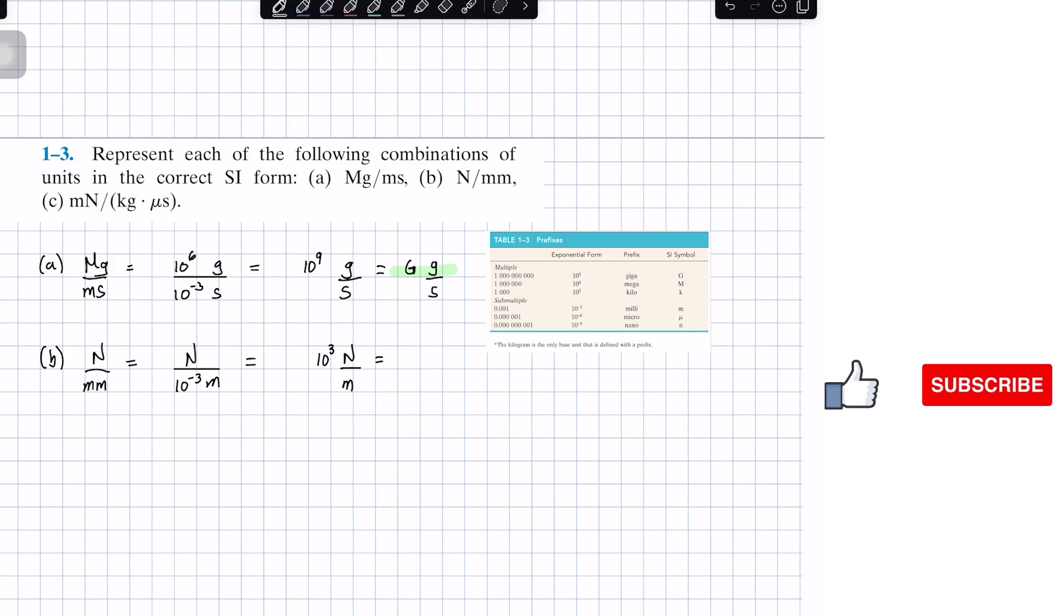Finally, we go back and put it in our prefix form, and that becomes kilonewton per meter. That will be the solution for problem B.